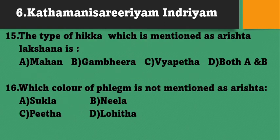Kadamani Shaririyam Indriyam: The type of Hikka which is mentioned as Arishtalakshana - options: Mahan, Gambira, Vyabheda, or both A and B. The type of Hikka mentioned as Arishtalakshana is Gambira Hikka. Option B. Which color of phlegm is not mentioned as Arishtalakshana? Options: Shukla, Neela, Pita, Lohita. The color not mentioned as Arishtalakshana is Shukla. Option A.